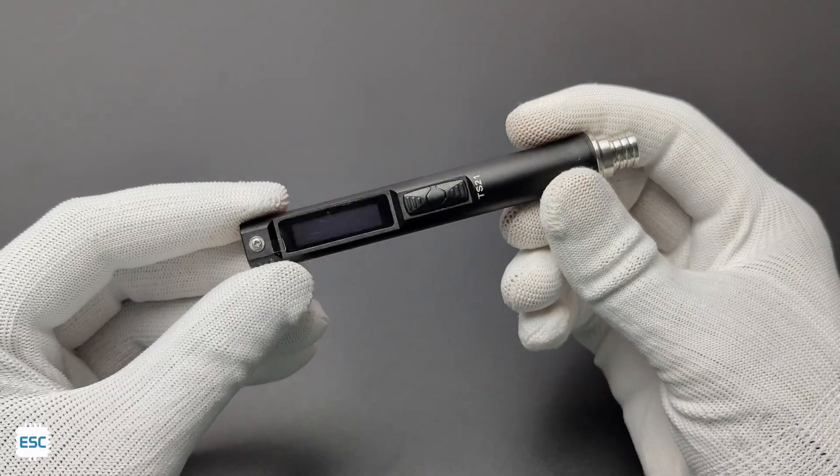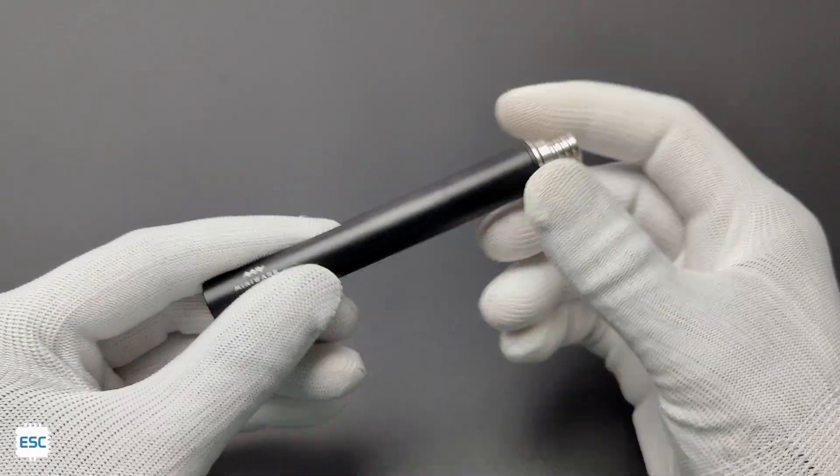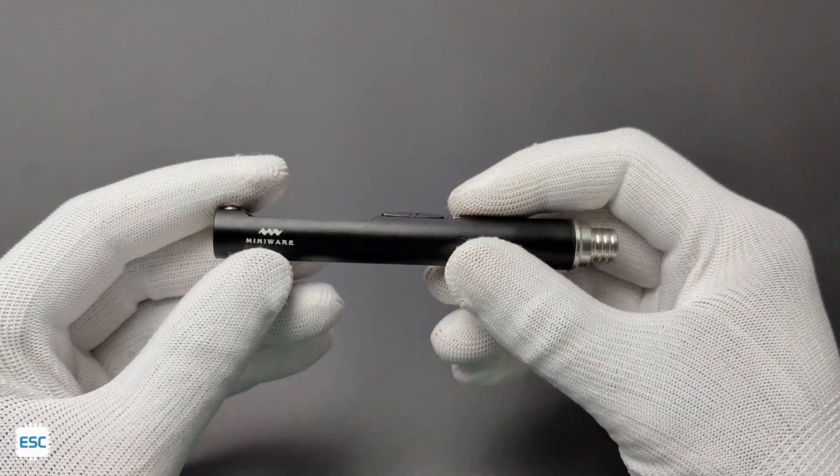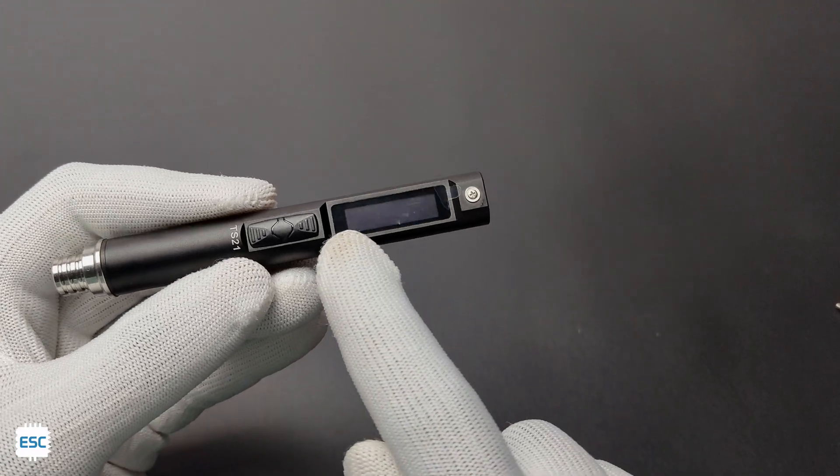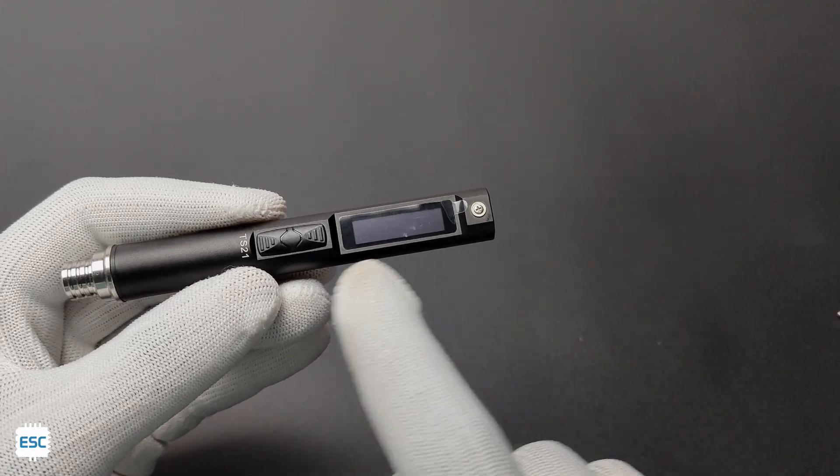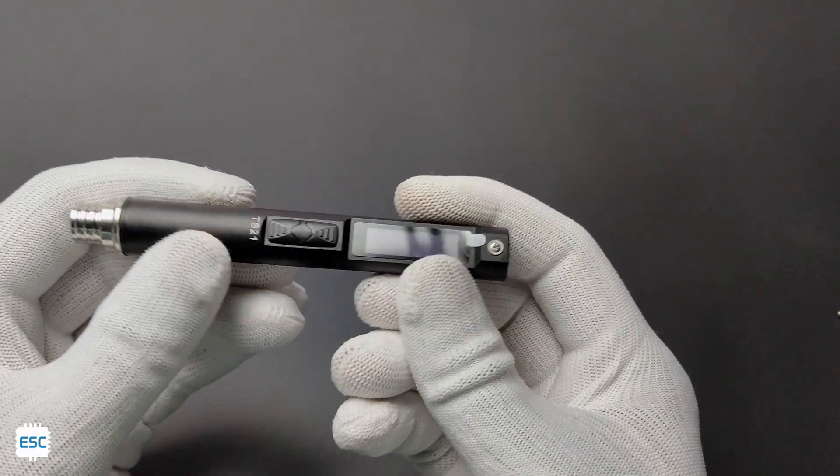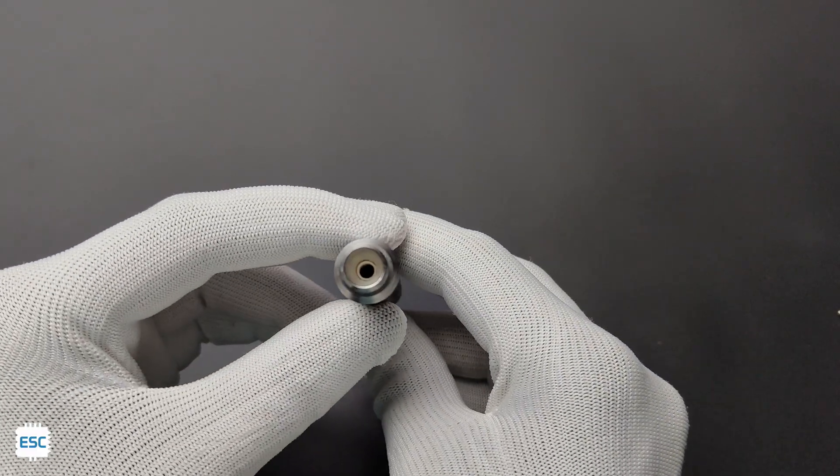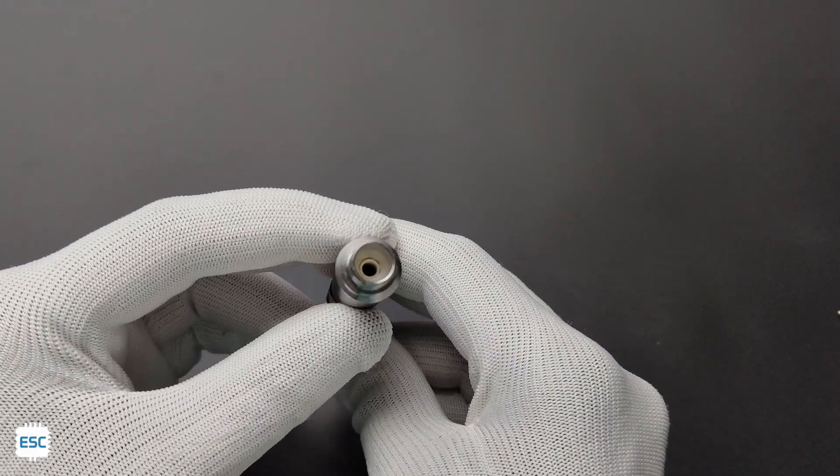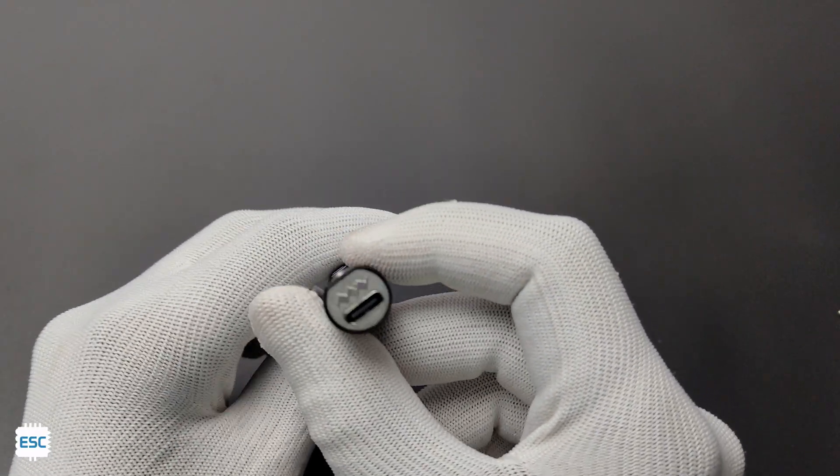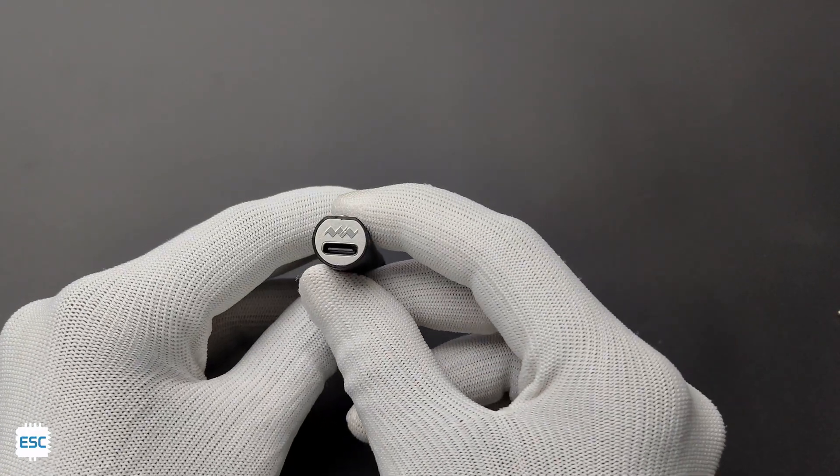The body or the controller of the soldering iron is made with aluminum alloy. It got a 0.91 inch OLED screen to display temperature and other parameters. Also, it has two buttons for controlling the parameters. In the tip side, we can see the LED light. On the bottom side, we can see the USB socket. There we can connect 18 to 100W PD adapters.